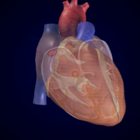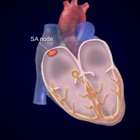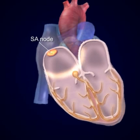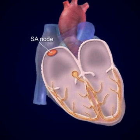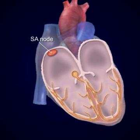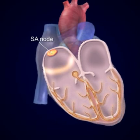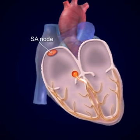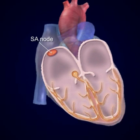The sinoatrial node, often referred to as the pacemaker, initiates the conduction process. Located in the upper area of the right atrium, it sends the electrical impulse that triggers each heartbeat. The impulse spreads through the atria, prompting the cardiac muscle tissue to contract in a coordinated manner.